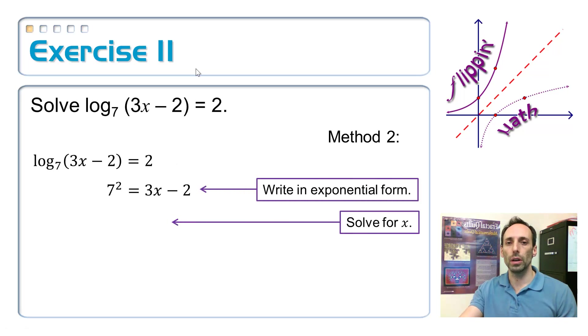So, there it is, rewritten in exponential form. Didn't I get that from method number 1? I got the exact same thing, but here I got it maybe just a little bit sooner. So, now just solve that thing for x. I got to square the 7, add the 2 over, divide by 3, and I still get the exact same answer.